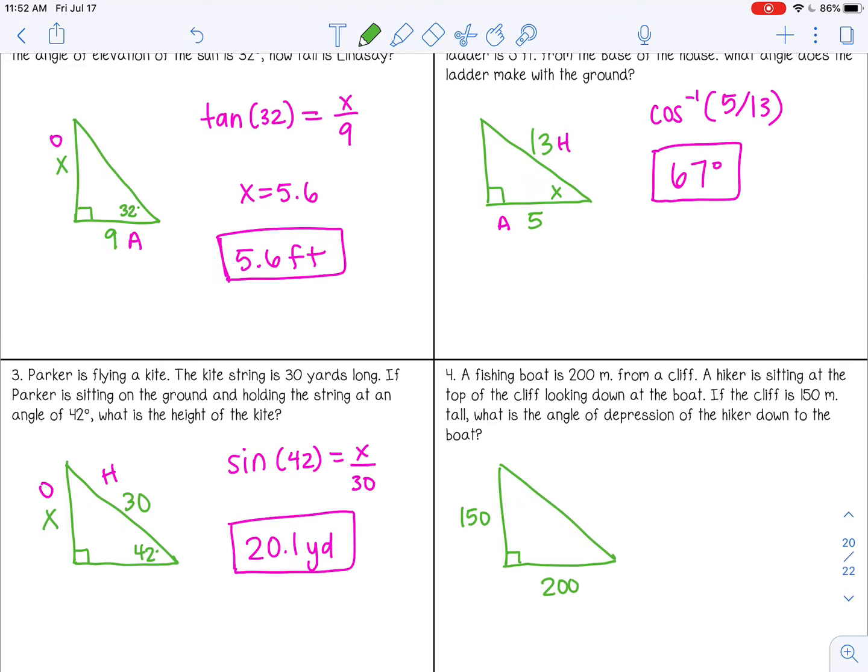What is the angle of depression of the hiker down to the boat? Now be careful. Don't ever put the angle of depression here. The angle of depression is actually outside the triangle here. But we can't use an angle outside the triangle if we're going to be finding things within the triangle. So I do know that the angle of depression is equal to the angle of elevation because they're alternate interior angles. So actually, this angle here is going to be the same. So I can solve for that and it will give me the angle of depression.